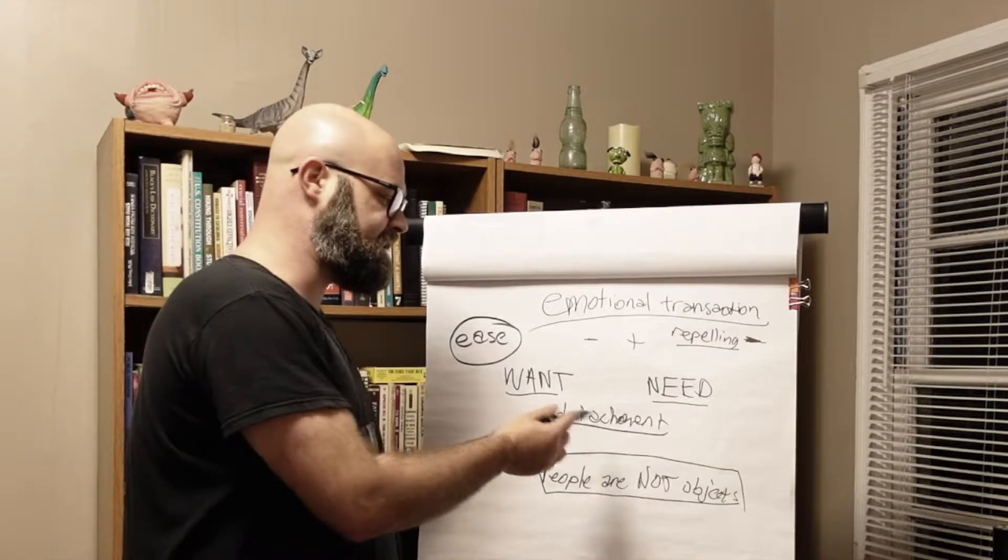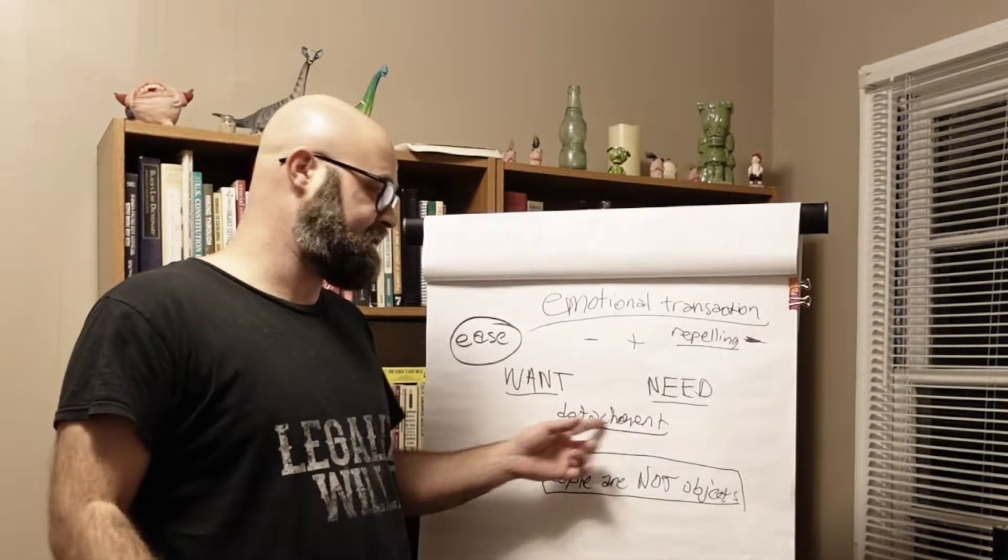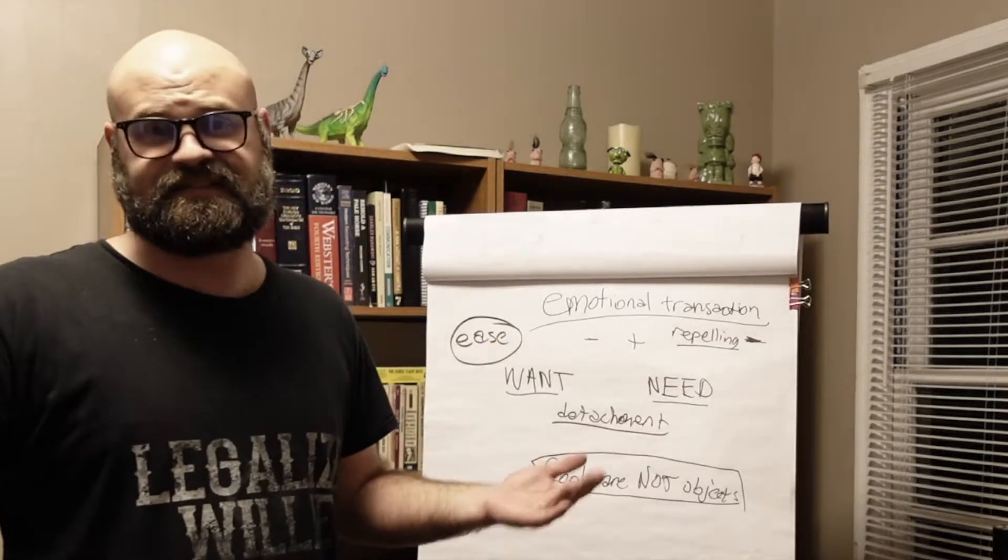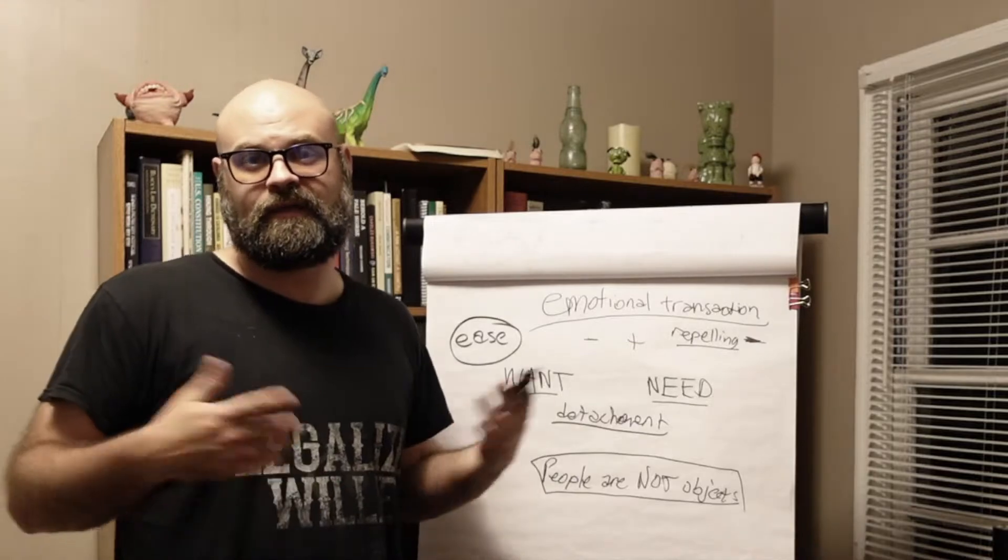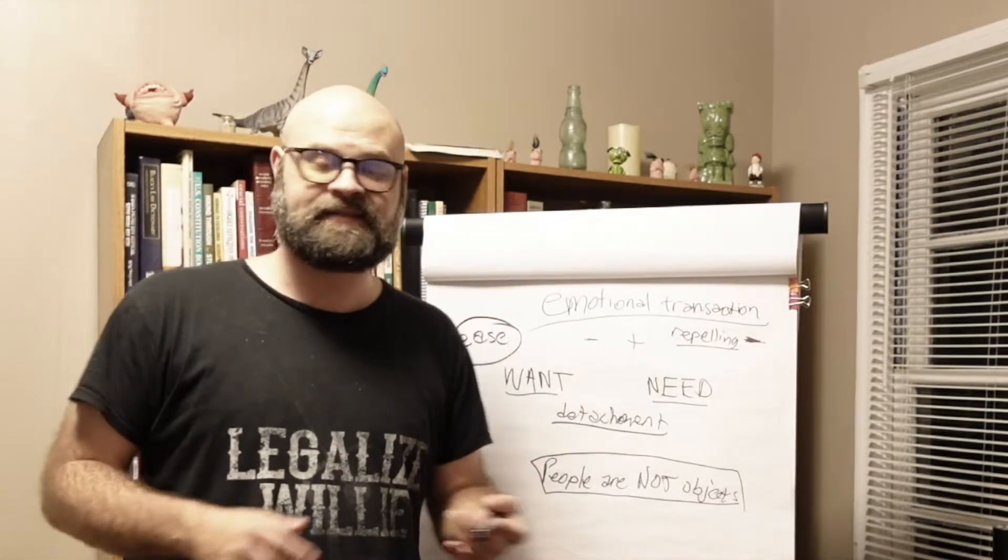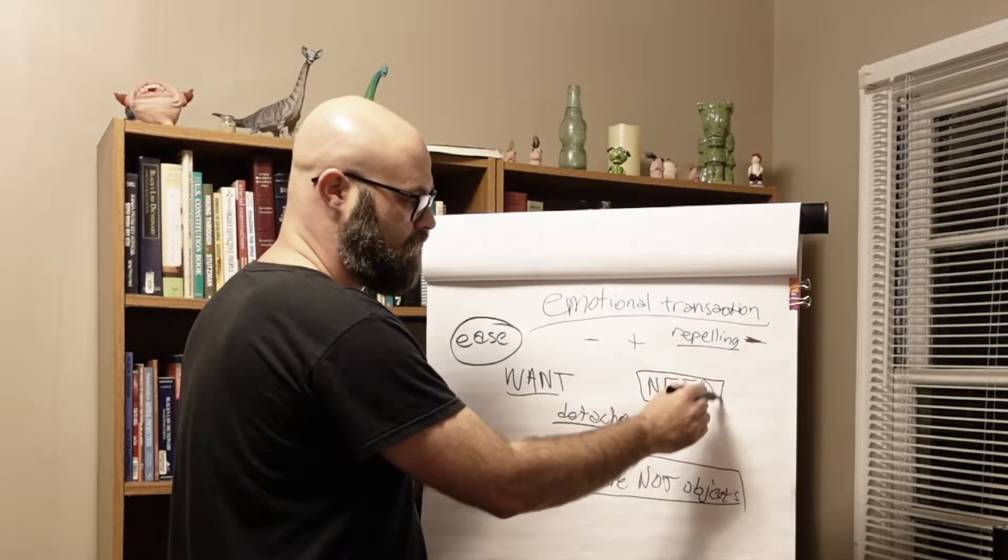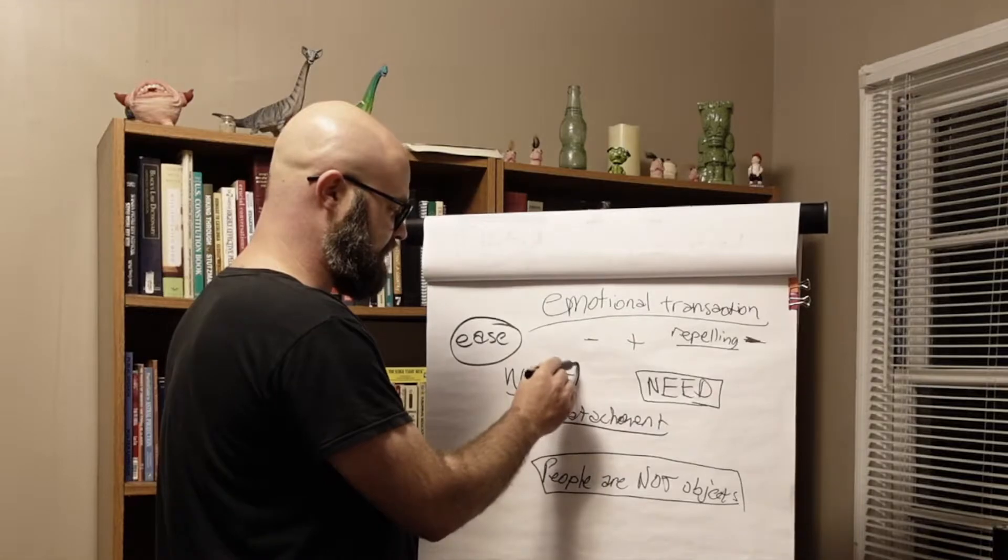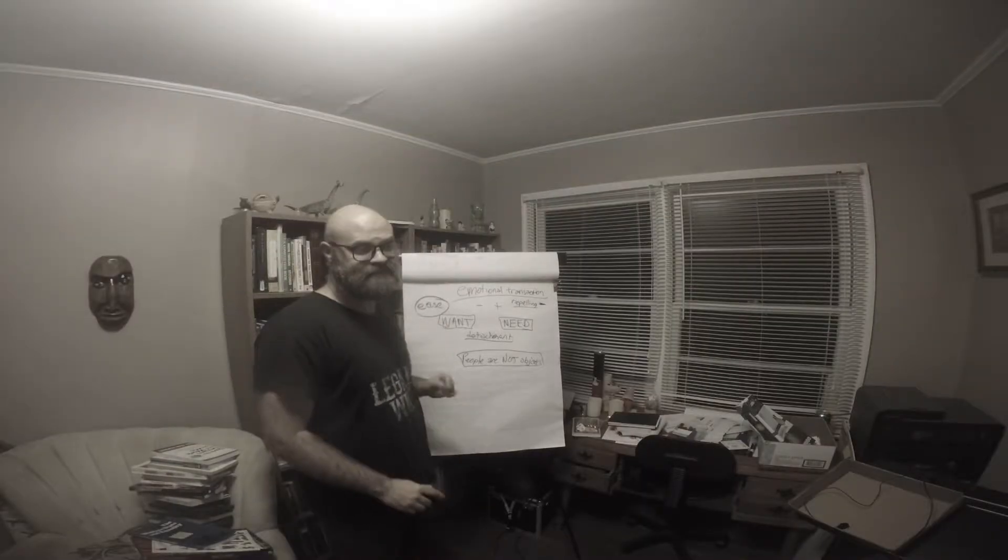Well, I think detachment is, first of all, a translated word. It's translated into English from probably Sanskrit or something like that. And we think, oh, well, if in order to have something, it means I can't want it. But that's really not true because let's look at the distinction here. Wanting versus needing.